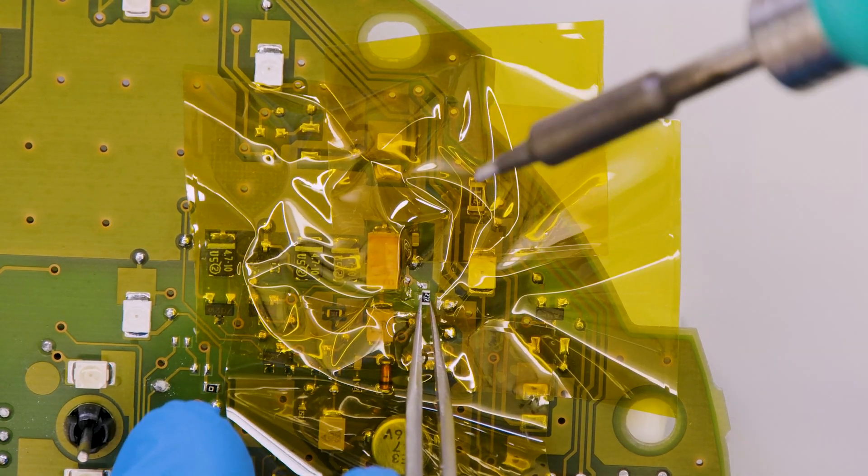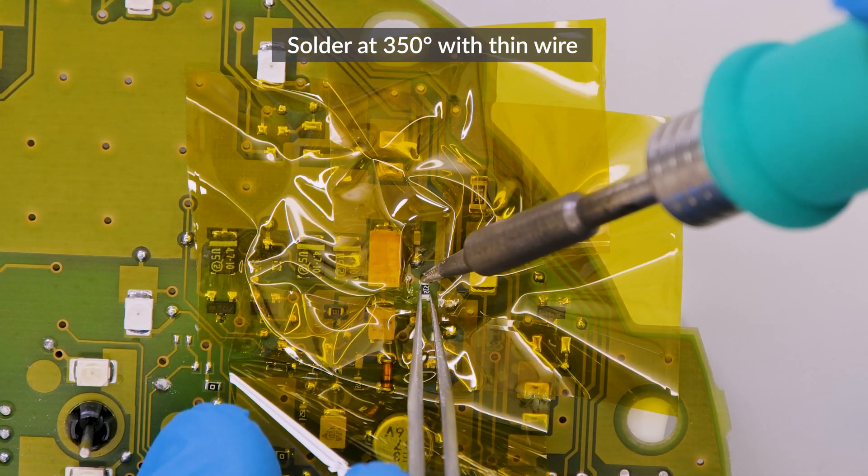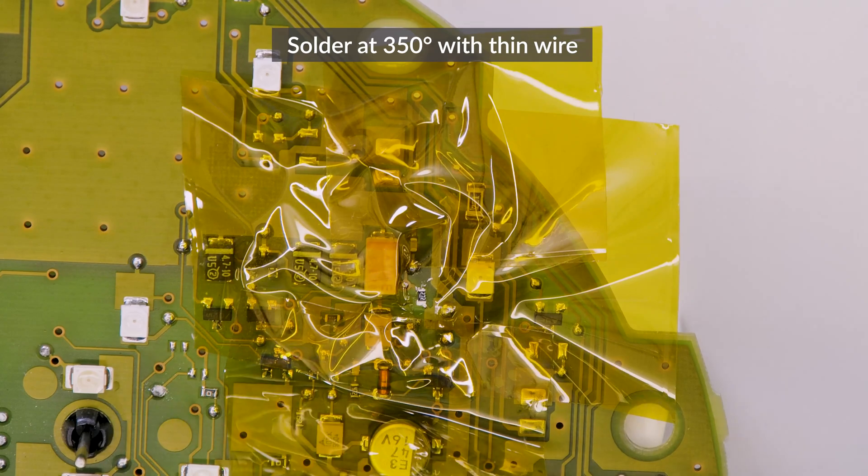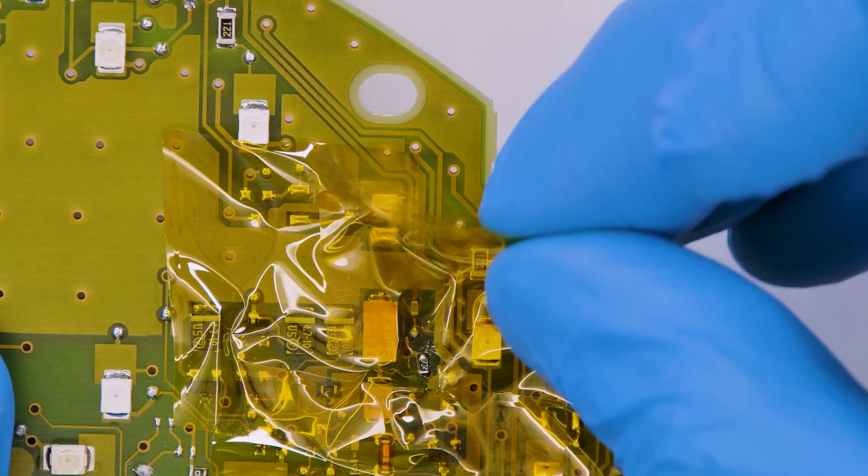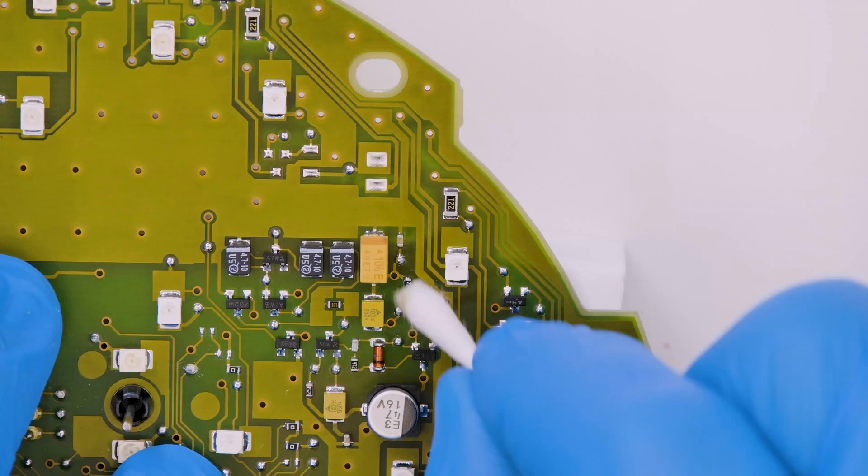Position and solder the resistor supplied with the MiniTools kit with the soldering iron at 350 degrees. Remove the Captain tape and clean with some solvent.